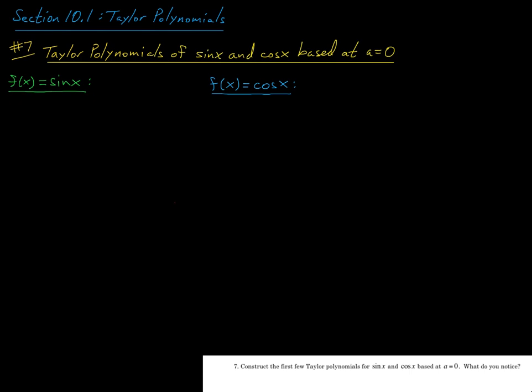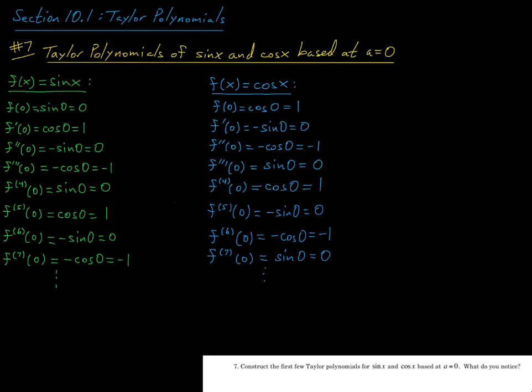And so doing this side by side, we have for sine x, f of 0 is sine 0, which is 0. f prime of 0, that's cos of 0, which is 1. f double prime of 0, that's negative sine 0, which is 0. The third derivative evaluated at 0, that's negative cos of 0, which is negative 1. And now notice by the time you get to the fourth derivative evaluated at 0, we wind up right back where we started, with sine of 0, which is 0.